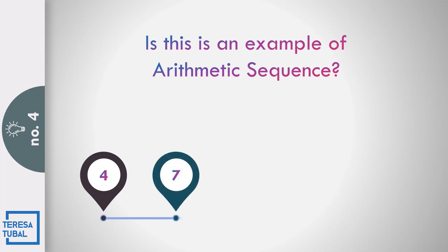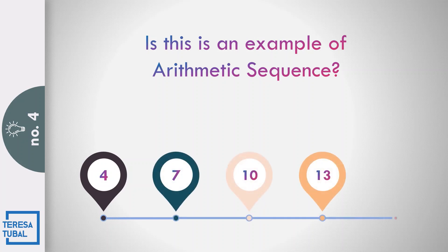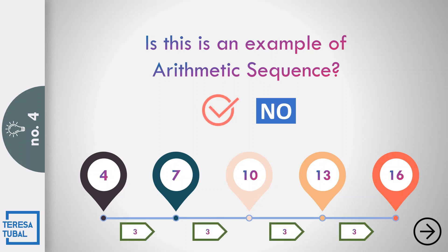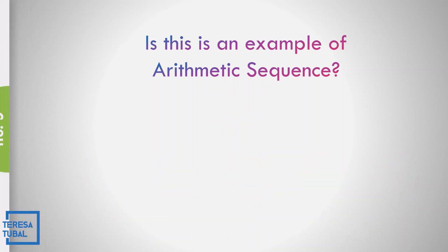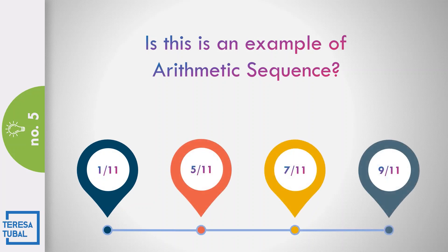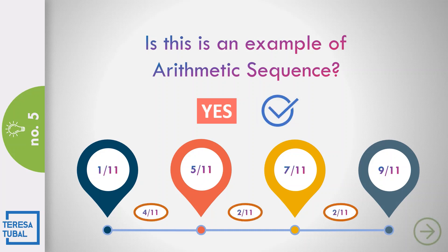Question number 4: Is 4, 7, 10, 13, and 16 an example of the arithmetic sequence? Yes, because the common difference is 3. Question number 5: Is 1/11, 5/11, 7/11, and 9/11 an arithmetic sequence? No, because the common difference from the first to the second term is 4/11, while from the second up to the last term is 2/11.